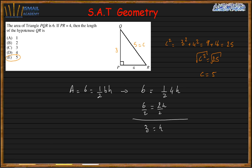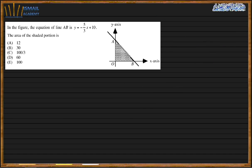Next question. The equation of line AB is y = -5/3·x + 10. We need to find the area of the shaded portion, which is a right triangle. To do that, I need to find the height and the base using the y-intercept and x-intercept.